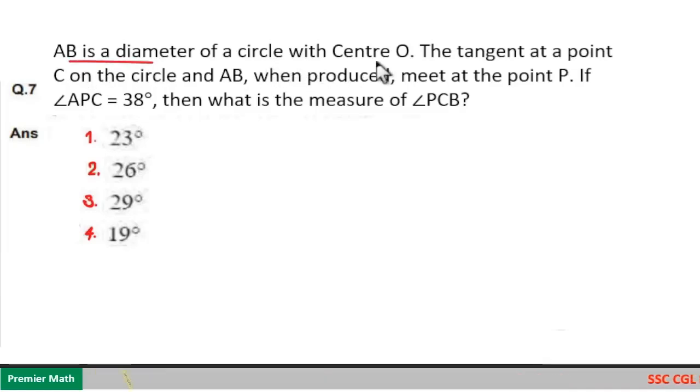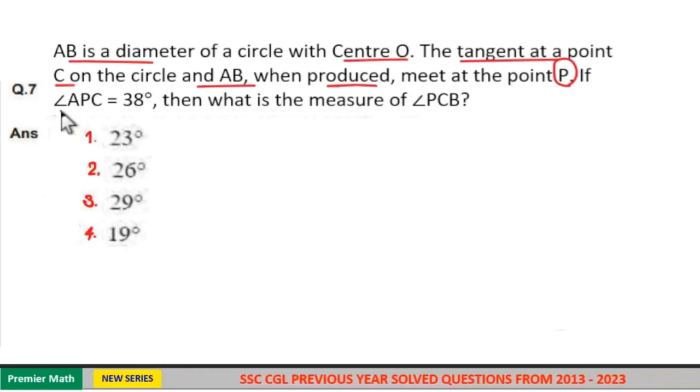AB is the diameter of a circle with center O. The tangent at point C on the circle and AB when produced meet at the point P. If angle APC is 38 degrees, then what is the measure of angle PCB?